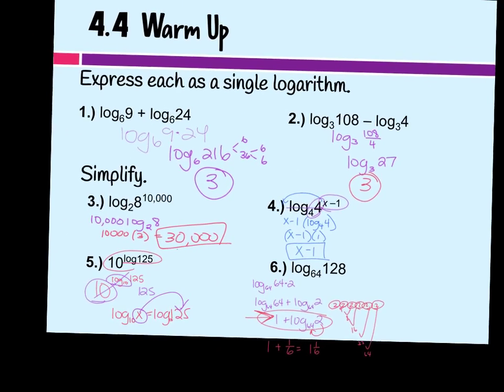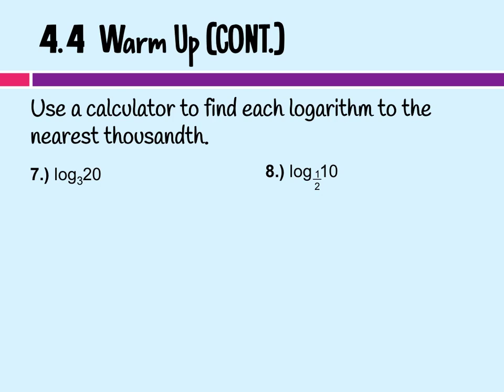Okay, and then the last two, we need a calculator. So it said use the calculator to find each log to the nearest thousandth. How many decimal places is thousandth? 3. Good. So for the first one, I would do log of 20 over log of 3. Which is 2.7268, which means 2.727.